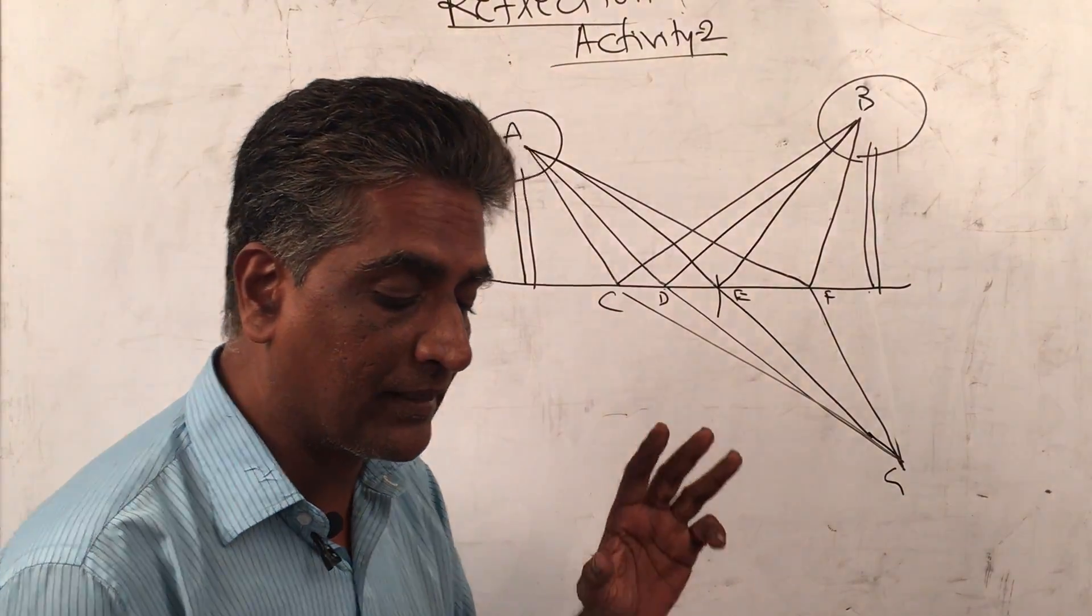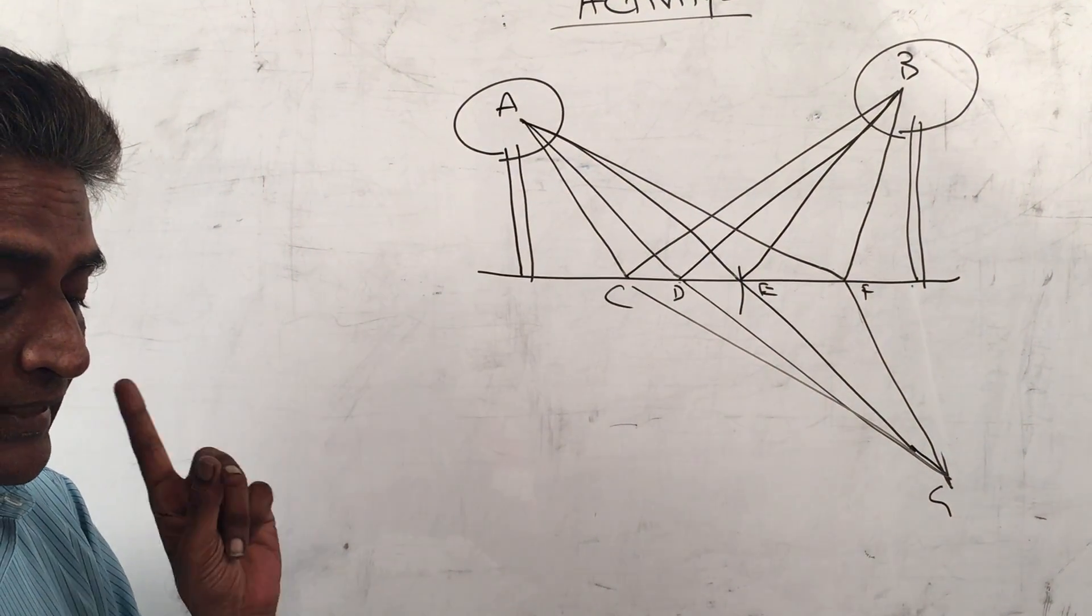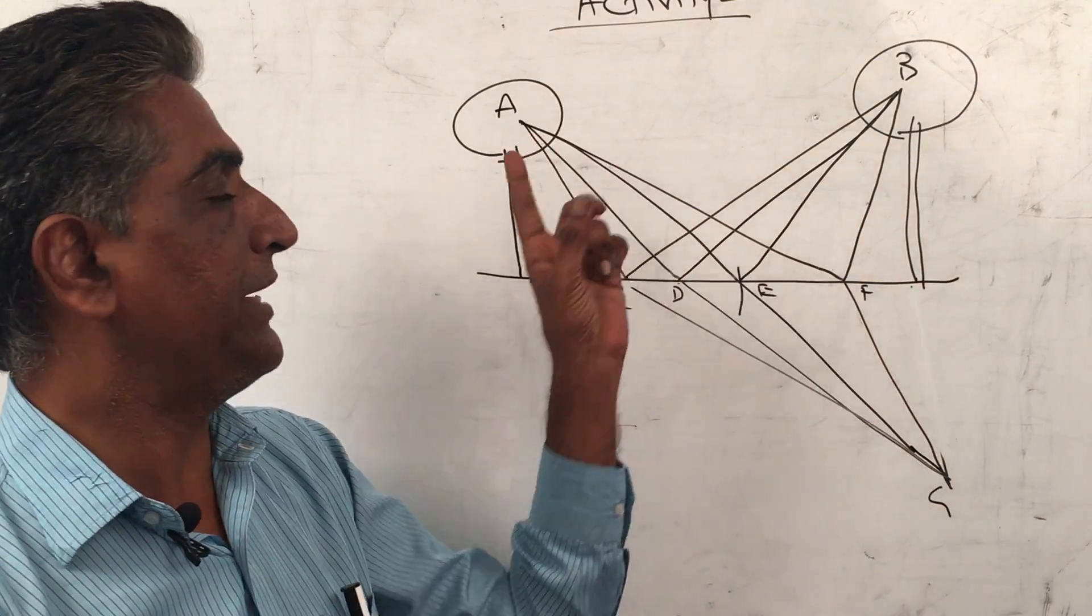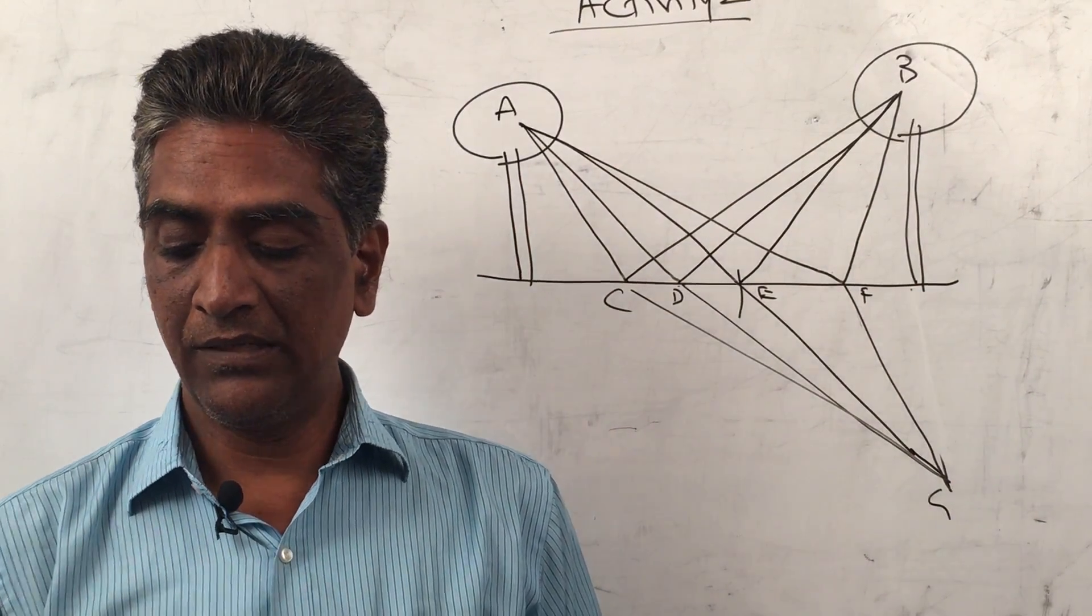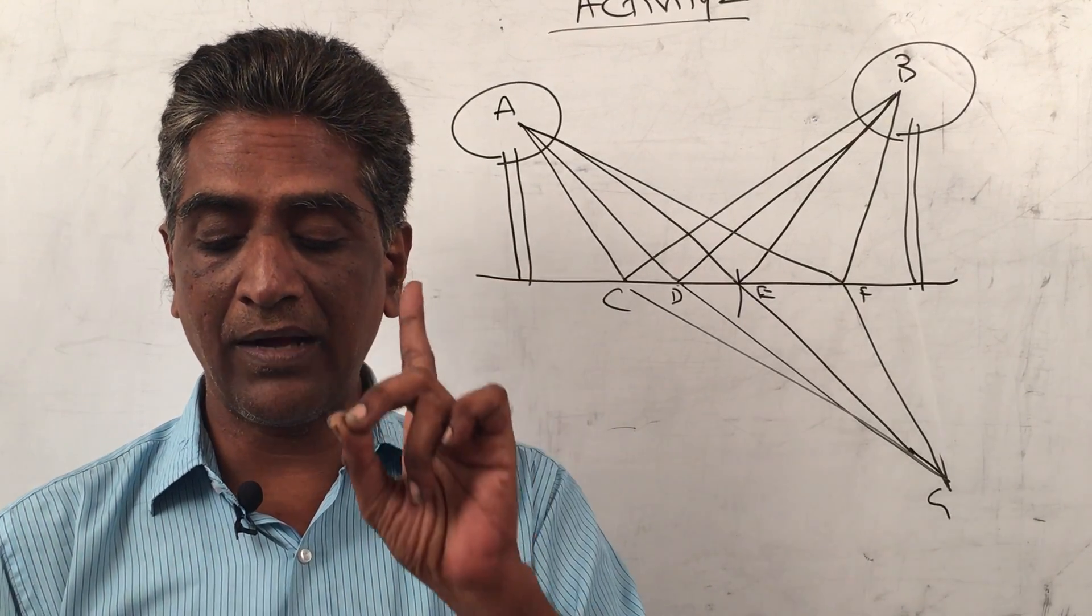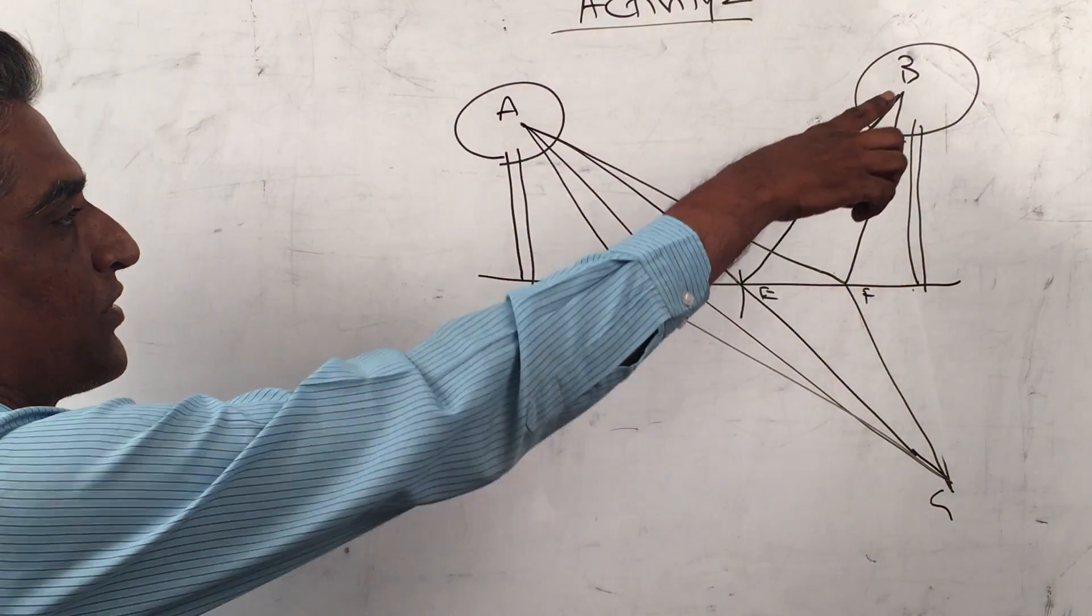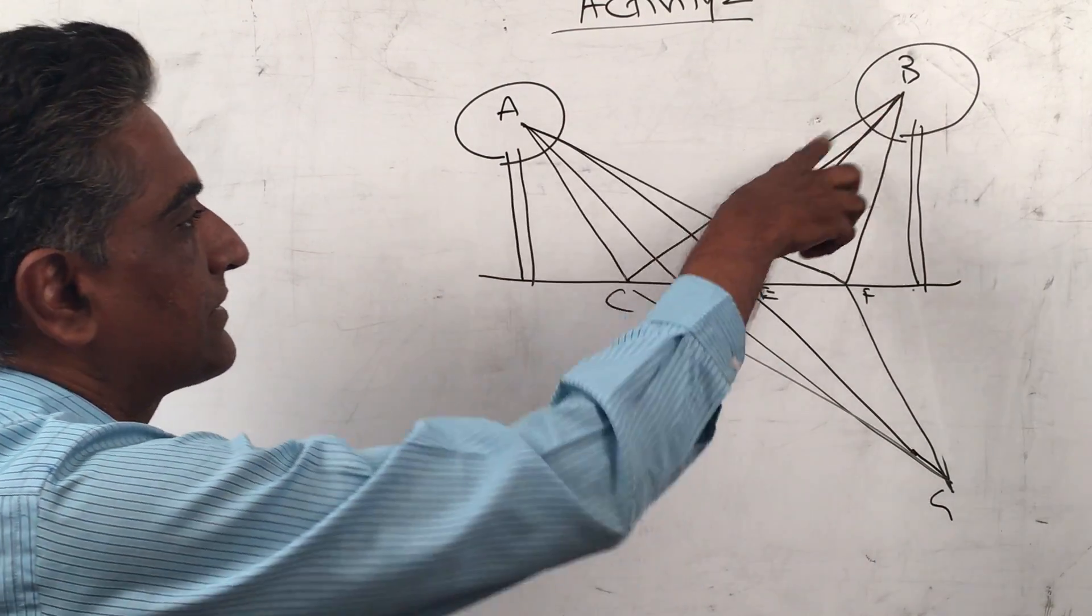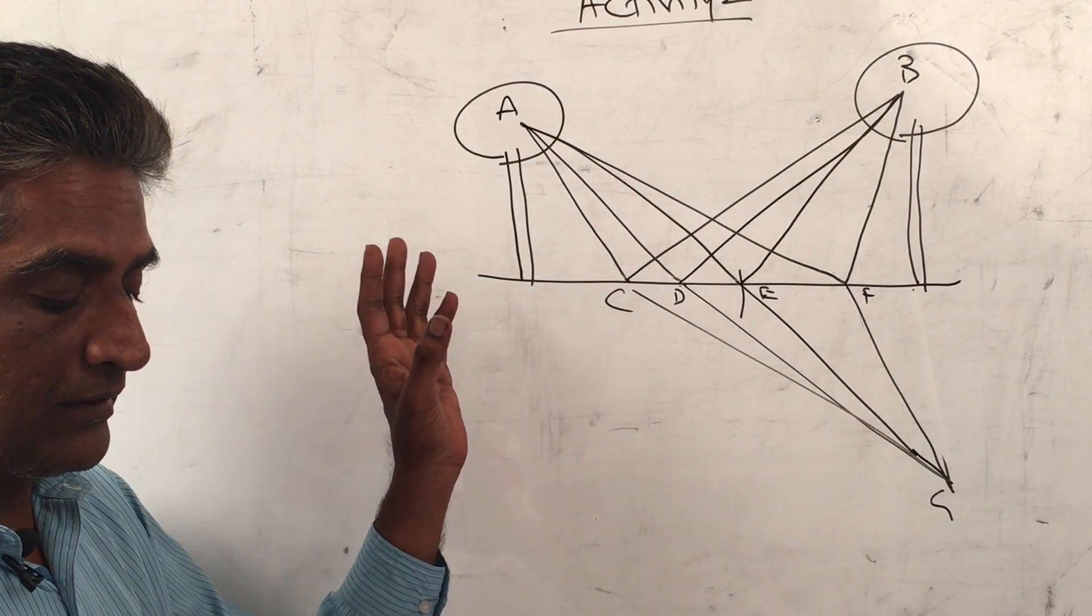The crow can pick the grain from any point on the ground, but the condition is: to reach B from point A, it should take the least possible time. If we assume that the speed of crow is constant, the path that the crow selects should be the shortest. The path should be the shortest because the speed is the same.